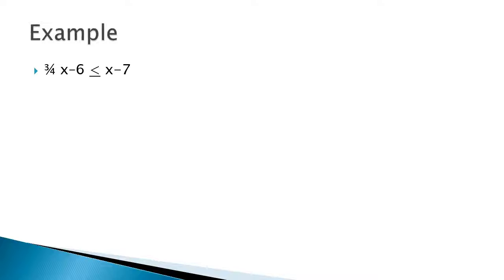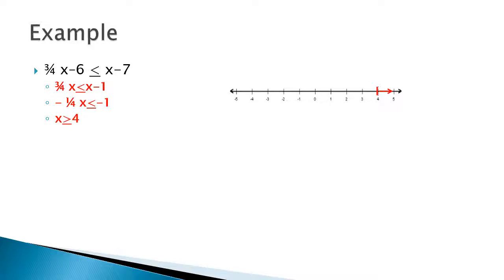Let's try another example. First, we added 6 to both sides, then subtracted x from both sides, and multiplied by negative 4 to get rid of the 1 fourth. When we did that, we had to reverse the inequality symbol. Here's what it looks like on a graph. This time we have a greater than or equal to, so we're using a squared-off bracket to indicate that.